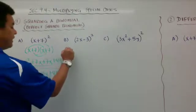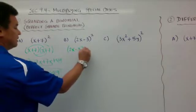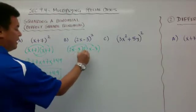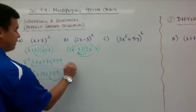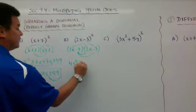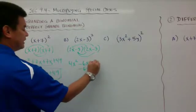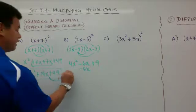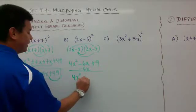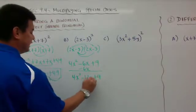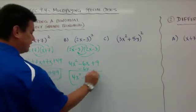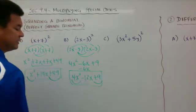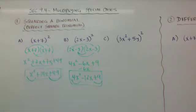For the second example, again rewrite it out twice. I'm going to do the FOIL a little faster. F and O, then I and L: you get 4x squared minus 6x minus 6x plus 9, because negative 3 times negative 3 is plus 9. When you combine the x terms in the middle, you get 4x squared minus 12x plus 9. Again, this is a perfect square trinomial because the square root of 4x squared is 2x, and the square root of positive 9 is 3.